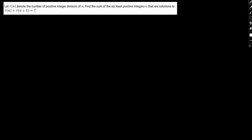Hello everyone, in this video we have a very interesting question. Let λ(n) denote the number of positive integer divisors of n. Find the sum of the six least possible integers n that are solutions to λ(n) + λ(n+1) = 7. Let's take a look at the approach towards finding the solution.